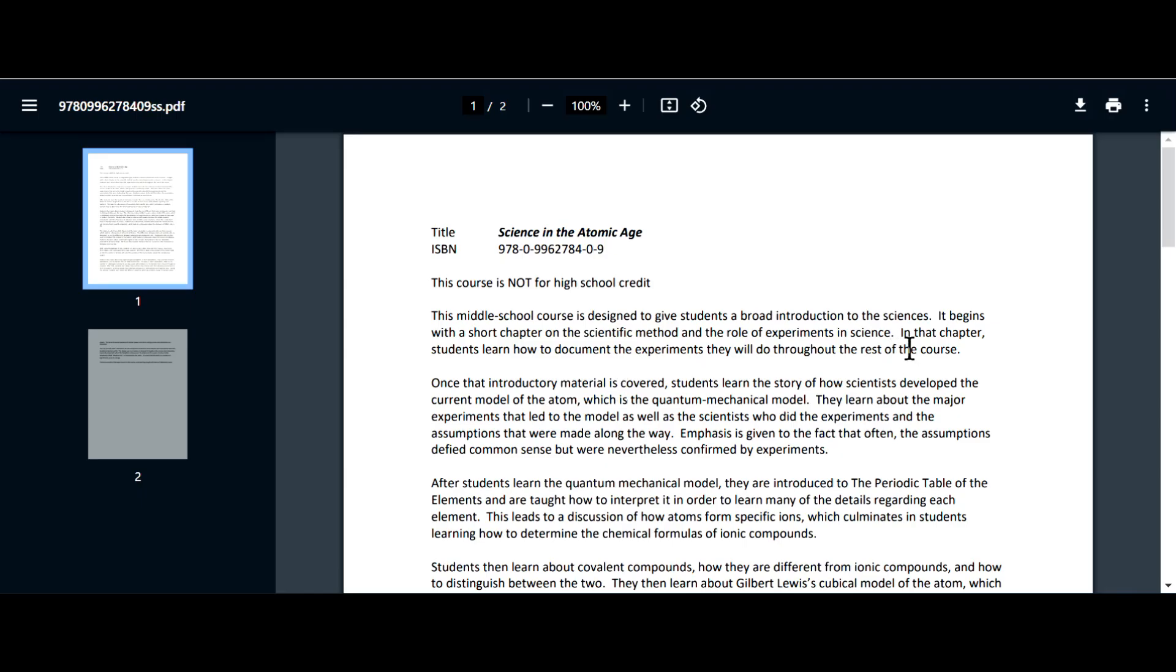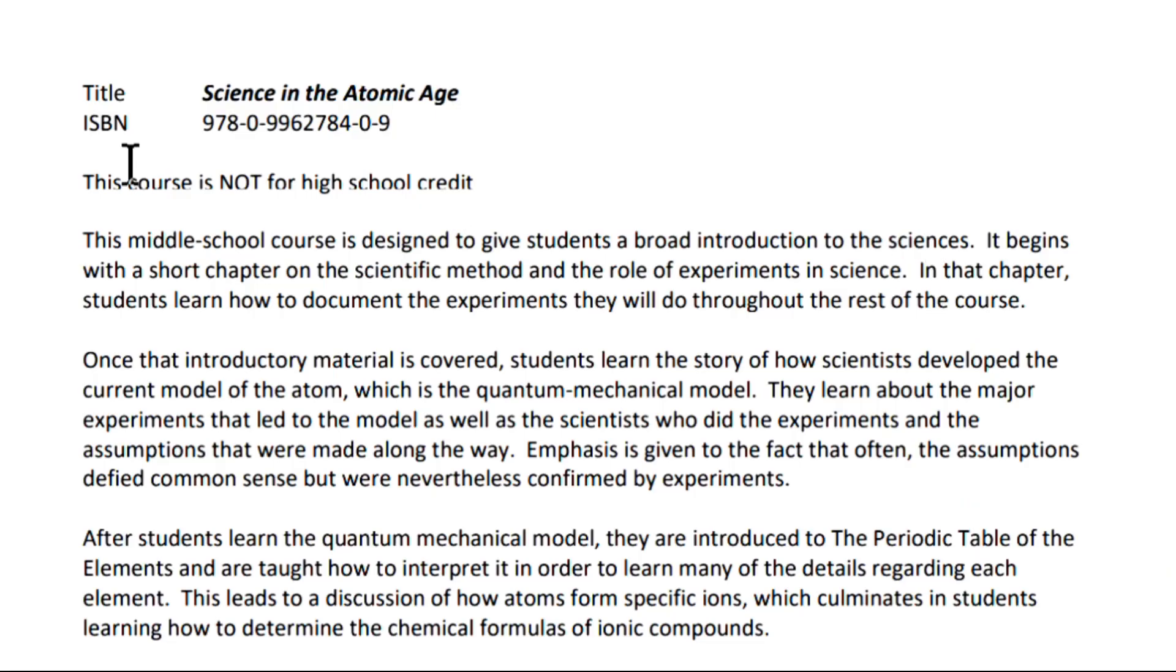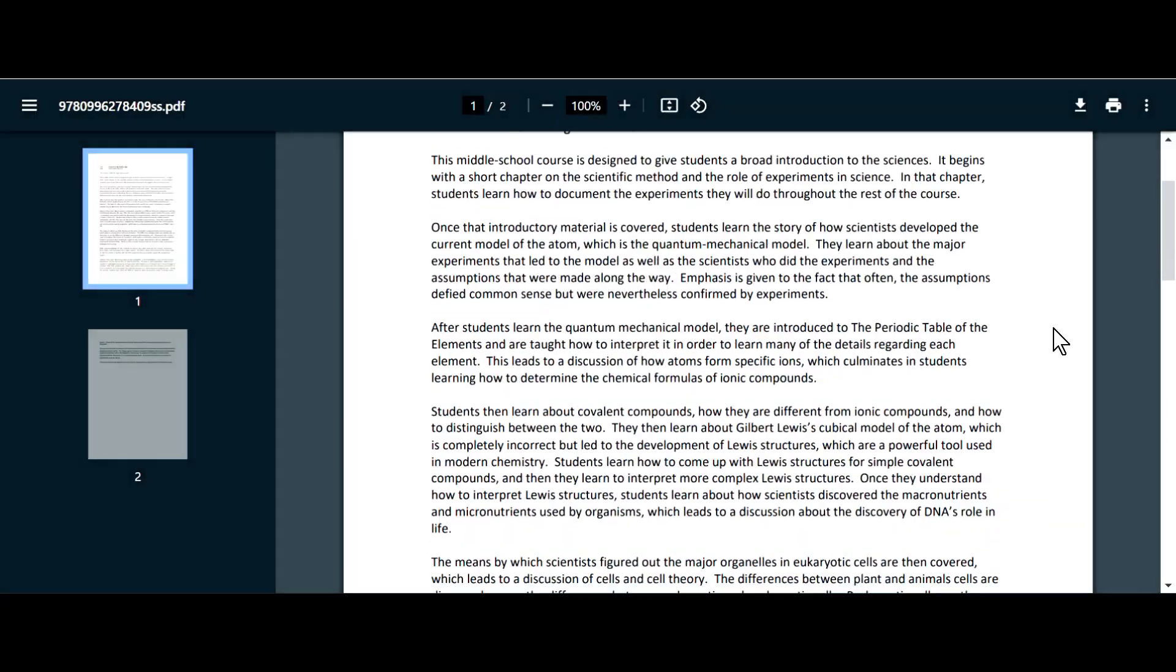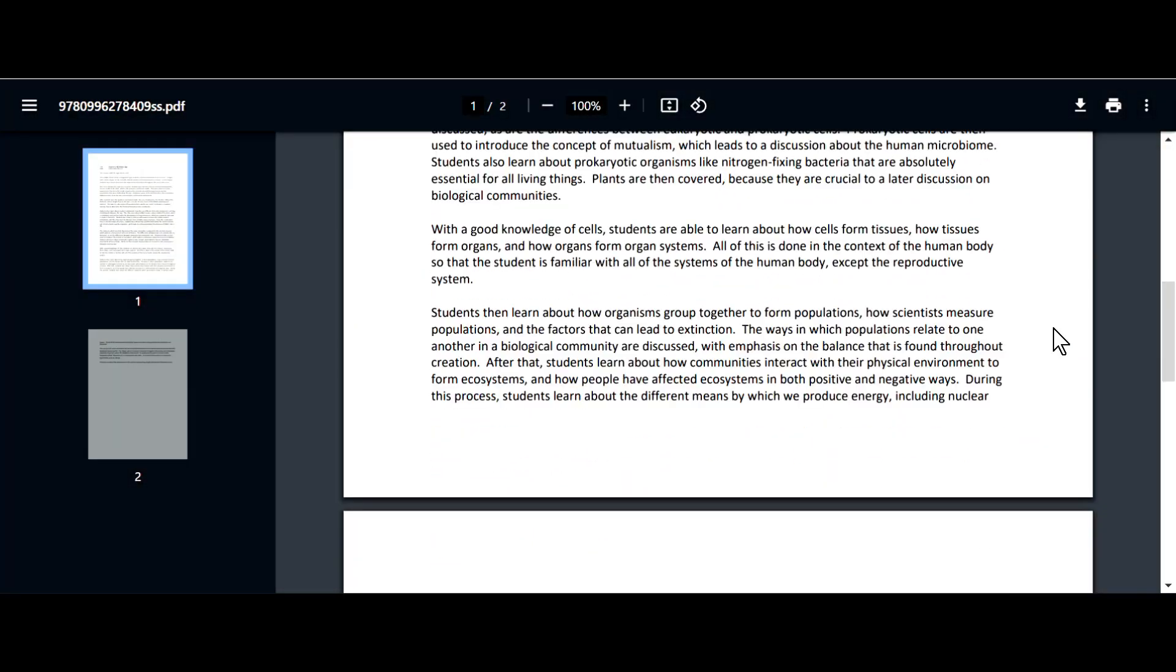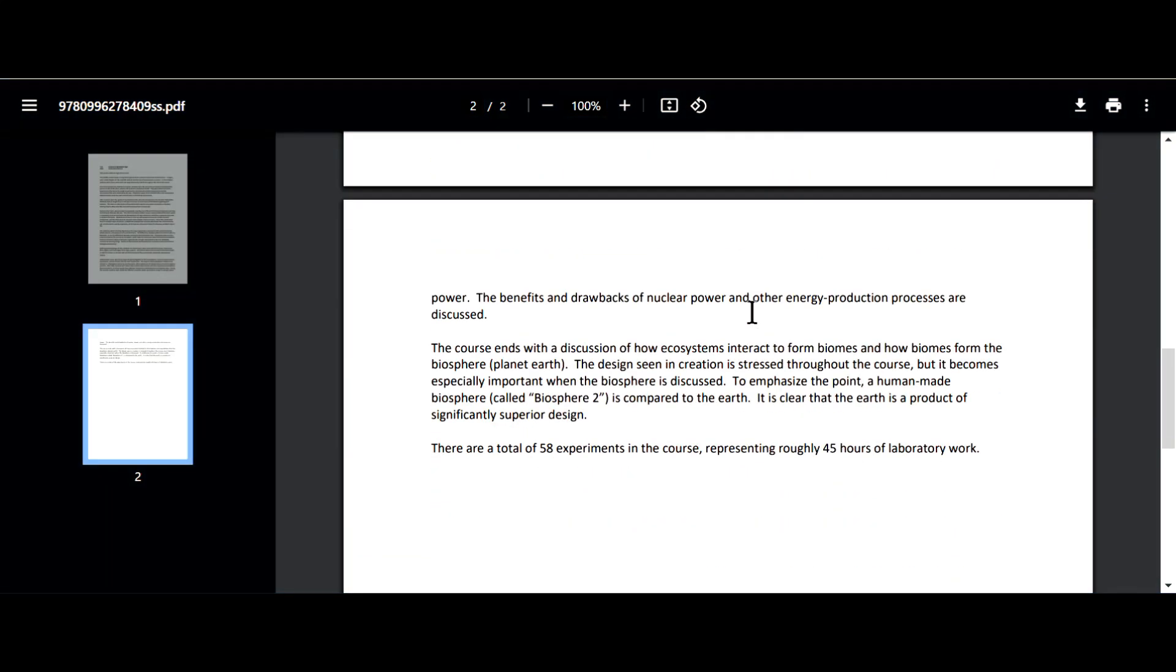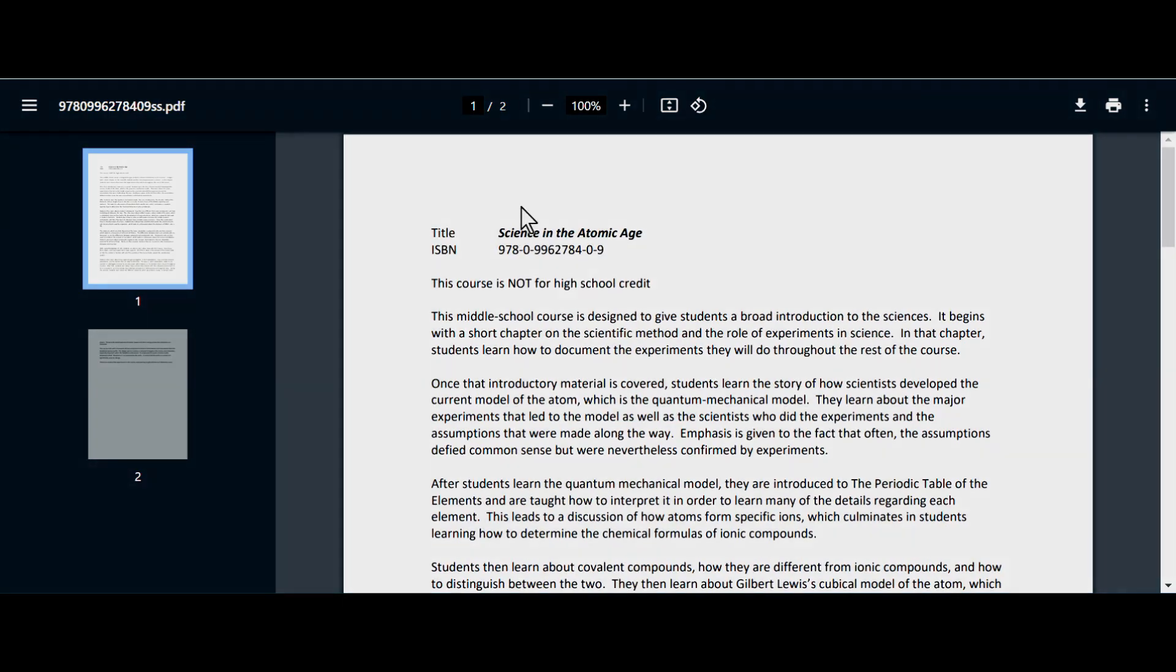And then we have the scope and sequence here. So it says this course is not for high school credit. This is a middle school course and designed to give students a broad introduction to the sciences. It begins with a short chapter on scientific method and the role of experiments in science. In that chapter, students learn how to document the experiments they will do throughout the rest of the course. All right, so just once again saying it is a middle school course. So the scope and sequence, I think it then goes through and tells what the student would be learning in this course.